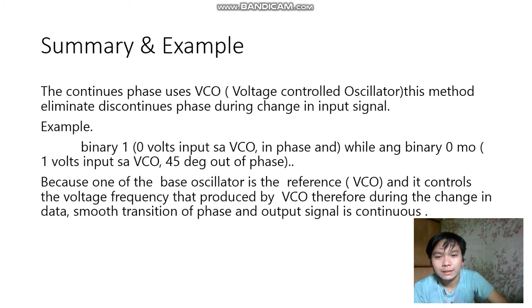Example: Binary 1: 0 volts input to VCO, in phase, while binary 0 is 1 volt input to VCO, 45 degrees out of phase. Because one of the base oscillators is the reference VCO and it controls the voltage frequency that produces VCO, therefore during the change in data, smooth transition of phase and output signal is continuous.